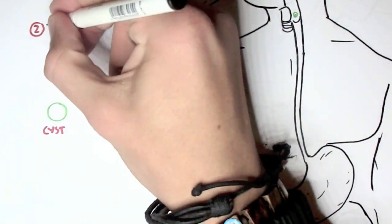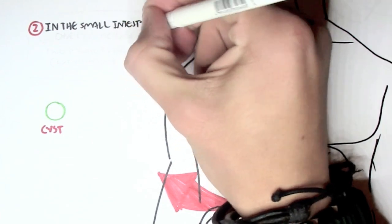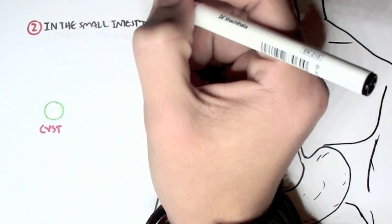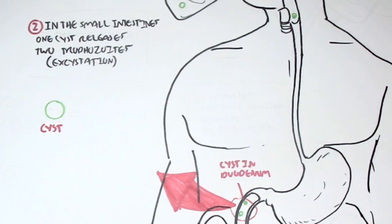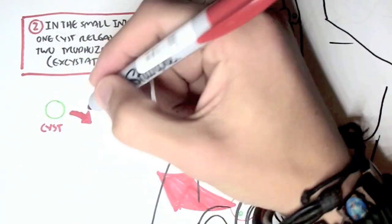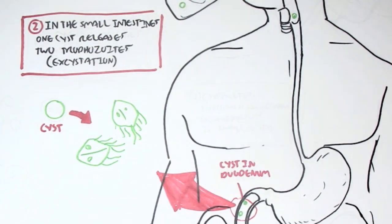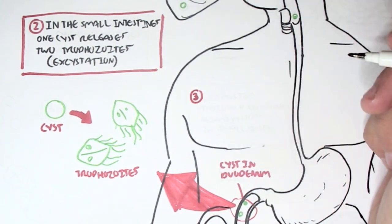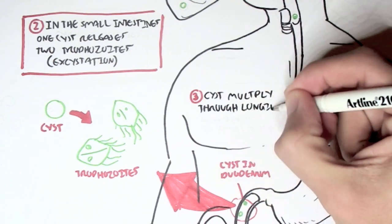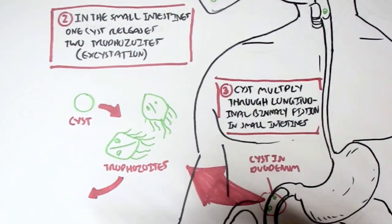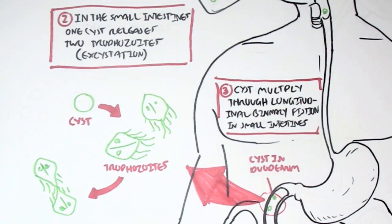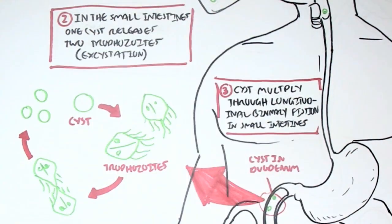In the small intestine, one cyst will become two trophozoites, will release two trophozoites, a process known as excystation. The trophozoite, not cysts, will multiply through longitudinal binary fission in the small intestine. So here the trophozoite will multiply through binary fission, longitudinal binary fission.